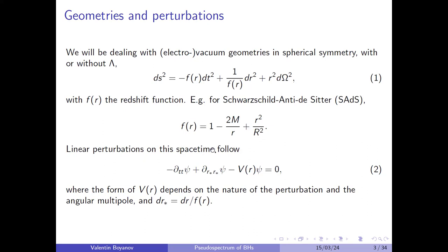Linear perturbations on these spacetimes, which are spherically symmetric, generally follow a wave equation with some potential. The potential depends on the nature of the perturbation, the particulars of the spacetime, and the angular multipole number. Here r-star is the tortoise coordinate, the integral of the redshift function.